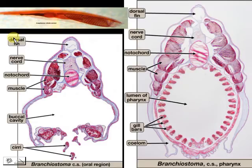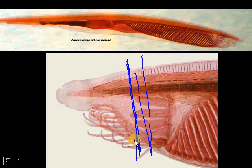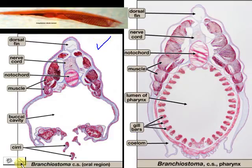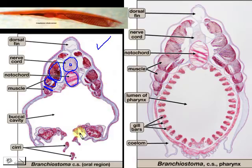These are the cross-sections. If we take a cross-section somewhere along the oral hood, the structures you will see include: the dorsal fin, the dorsal hollow nerve cord, the notochord, and the myomeres — each segment is called a myotome, separated by myosepta. You will also see the buccal cirri in cross-section, and the epidermis. Those are the main structures visible at the oral region.